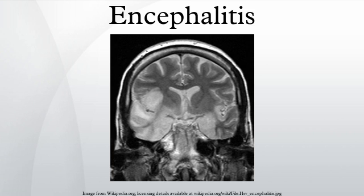Viral encephalitis can occur either as a direct effect of an acute infection, or as one of the sequelae of a latent infection. The most common causes of acute viral encephalitis are rabies virus, herpes simplex, poliovirus, measles virus, varicella zoster virus, and JC virus.